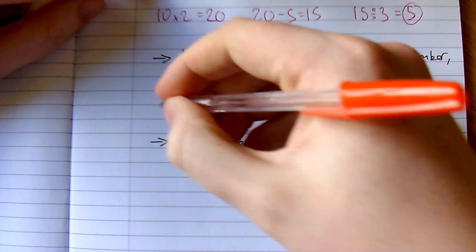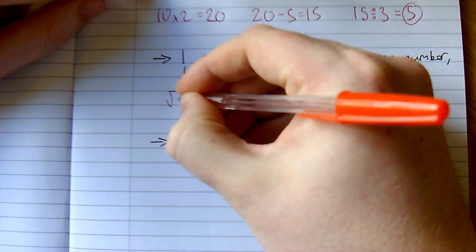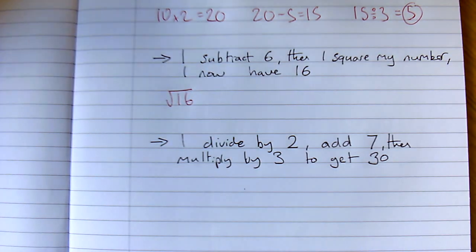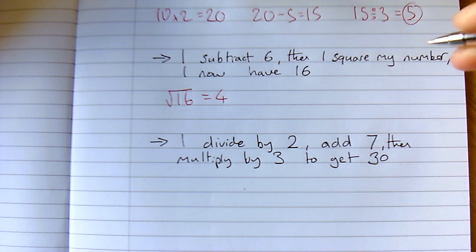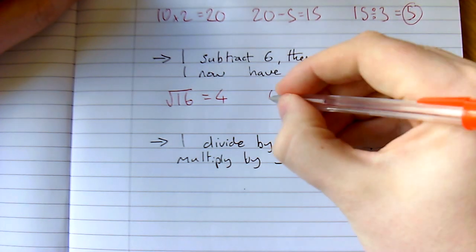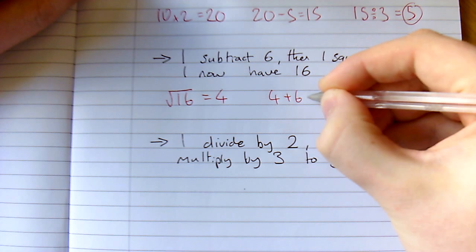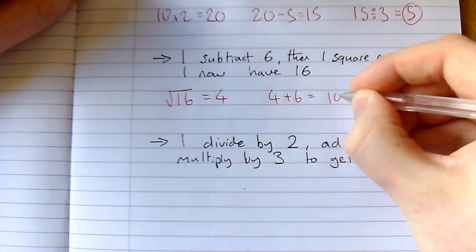So the opposite of a square is a square root. So the square root of 16, what times itself is 16? The answer is 4. Now I've subtracted 6, so I now need to add 6 back on. I get 10, which of course is my number there.